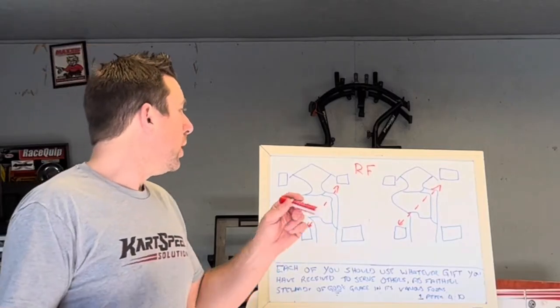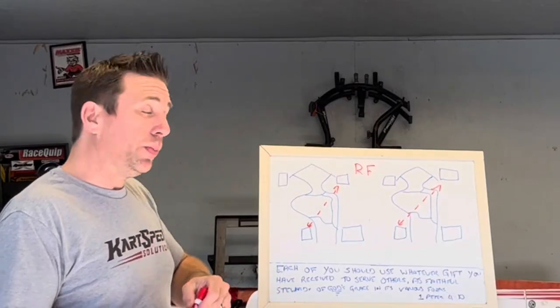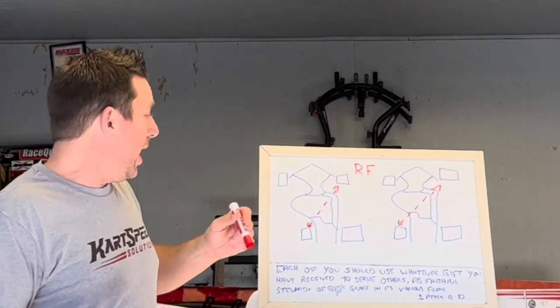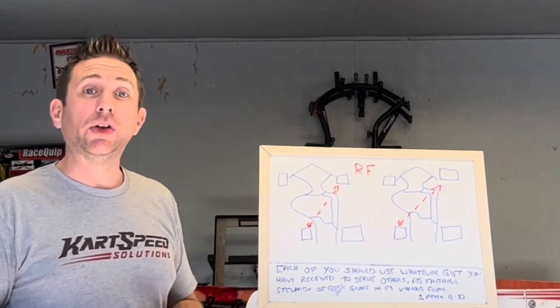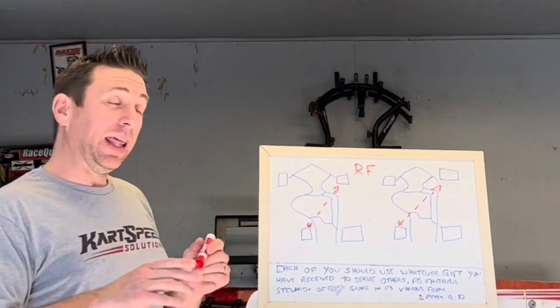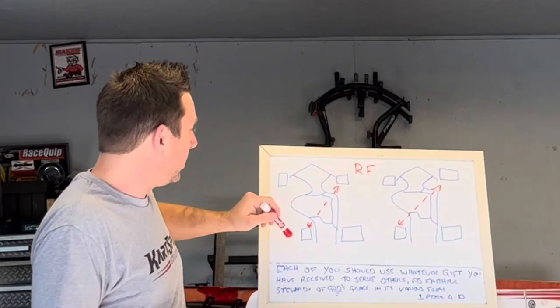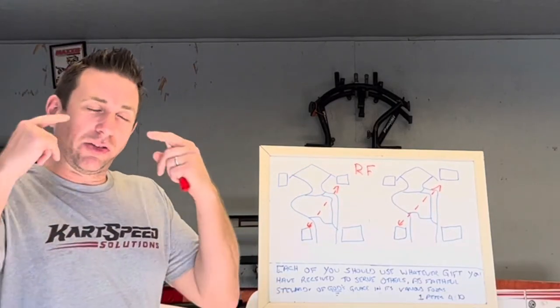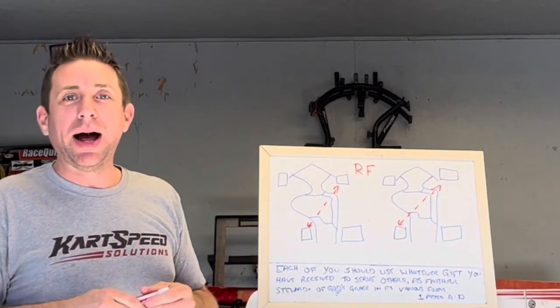We're gonna start off with the right front. So when you put the right front in the rear position, what you're actually doing is increasing the speed in which it transfers weight to the right front. The easy way to think about this is you're actually shortening the distance that the weight has to travel to get to the right front.